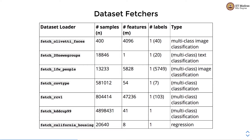There are other larger datasets that are not bundled with sklearn but are available on external sources like the internet. To access these datasets, we generally need to download them to disk and then load them from there. sklearn dataset fetchers ease out that functionality for us — they download and load certain datasets from external sources automatically.